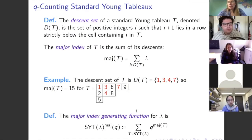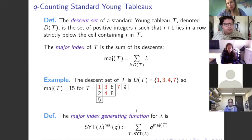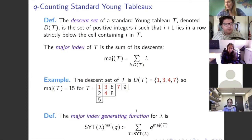The major index is the sum of the descents — the analog of the major index of a permutation. In this example with a standard Young tableau T having 1, 3, 6, 7, 9 across the top, the descents are in red: 1 is a descent because 2 is in a row below, 3 is a descent because 4 is below, 4 is a descent because 5 is below, but 5 is not a descent because 6 is above. The descents here are 1, 3, 4, and 7, summing to 15. So the major index of this tableau is 15.